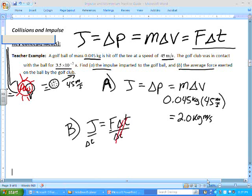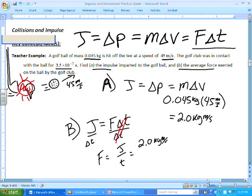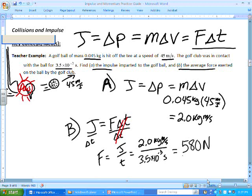So then the force becomes equal to the impulse divided by the time in which that took place. So the impulse we already calculated was 2.0 kilogram meters per second, and the time that it took should have been 3.5 times 10 to the negative third seconds. So we do the math there, and we get 580 newtons of force. That's your answer to B. This was our answer to A.